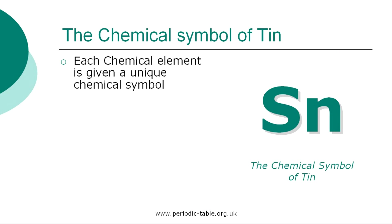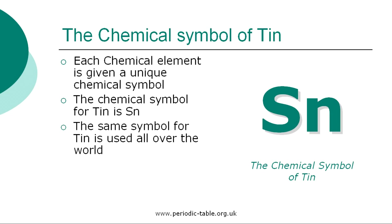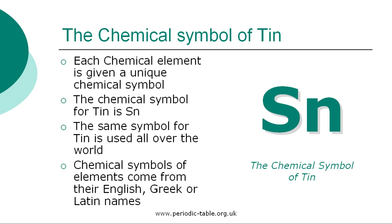Each chemical element is given a unique chemical symbol, which is used all over the world. The chemical symbol for tin is SN. The chemical symbols of elements come from their English, Greek, or Latin names. The first letter of a symbol is always a capital letter, and if there are any subsequent letters, they are expressed in lowercase.